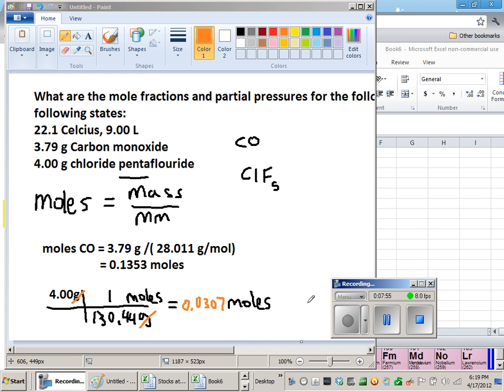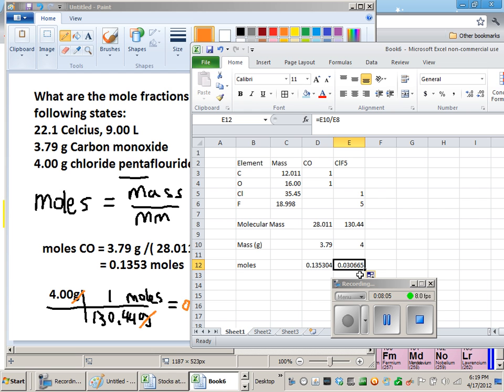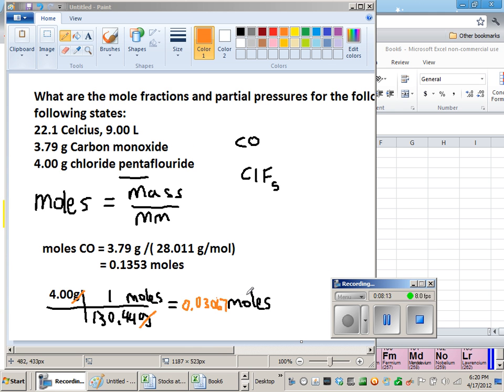Notice that I'm not actually rounding to sig figs yet. That's because I don't want to have any rounding error, so I'm keeping at least one extra sig fig. Actually, I need to have an extra one here because I should be going to four sig figs since I need three. So those are the two moles: the moles of CO and the moles of ClF5.